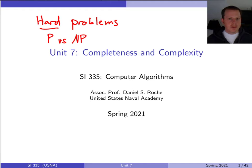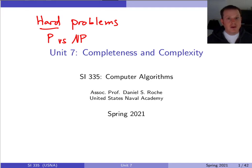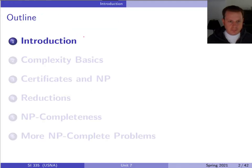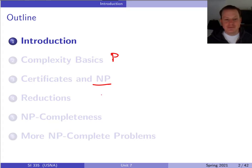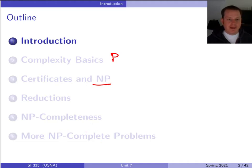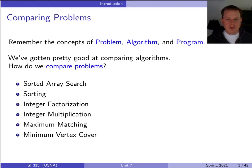This is probably the most theoretical unit in this class, relying on what you learned in SI 340, but it's always grounded in the practical question: when you come across a new problem, how can you understand what you should even be hoping for in solving it? We'll introduce P, then NP — and note, NP does not mean 'not P.' Reductions are the technical tool we use to compare problems, and then we'll look at NP-completeness.